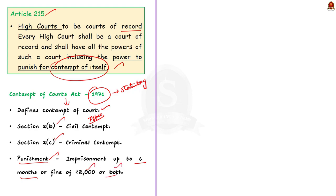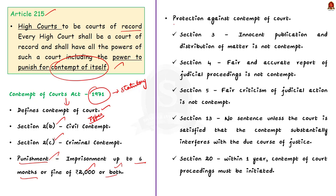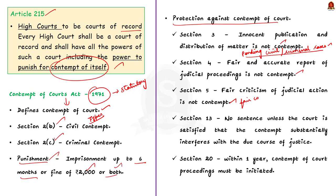The Act also provides some protections against contempt of court proceedings. Under Section 3, innocent publication and distribution of matter is not contempt — a person will not be guilty for anything published in connection with a pending civil or criminal proceeding if at the time of publishing they were not aware the case was pending. Under Section 4, a fair and accurate report of judicial proceedings is not contempt. Most importantly, under Section 5, fair criticism of judicial action is not contempt — a person shall not be guilty for publishing any fair comment on the merits of a case that has been heard and finally decided by the court.